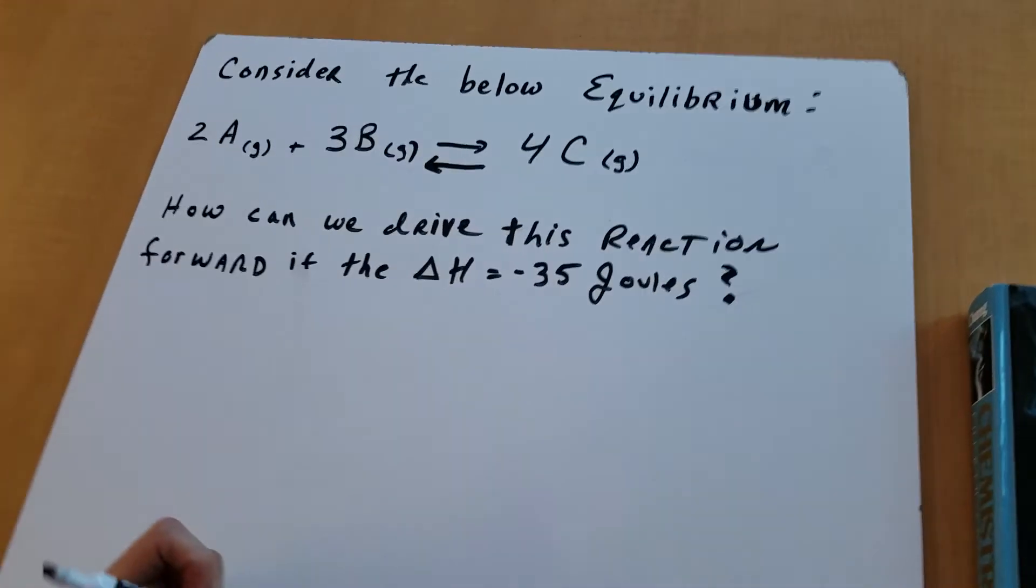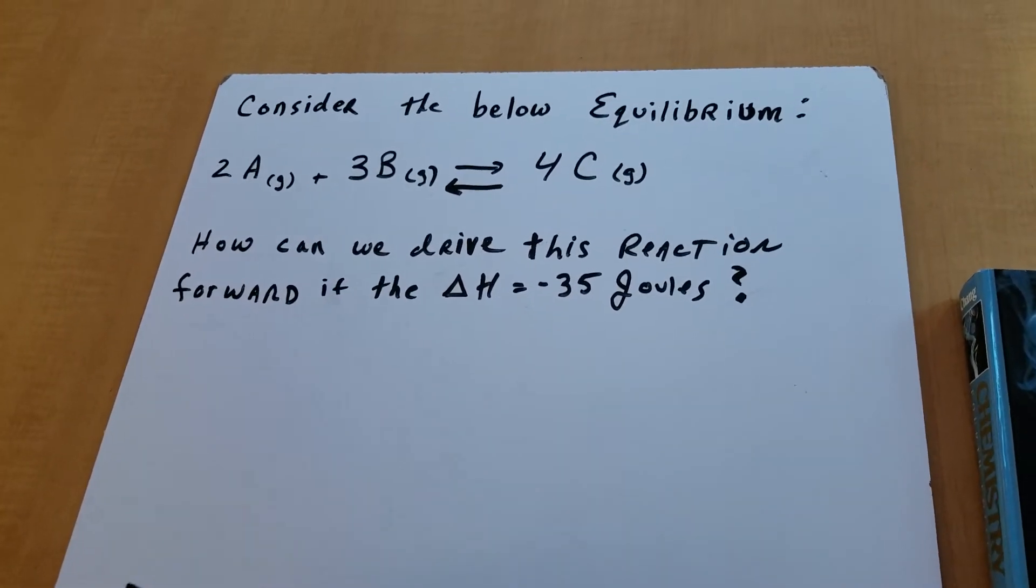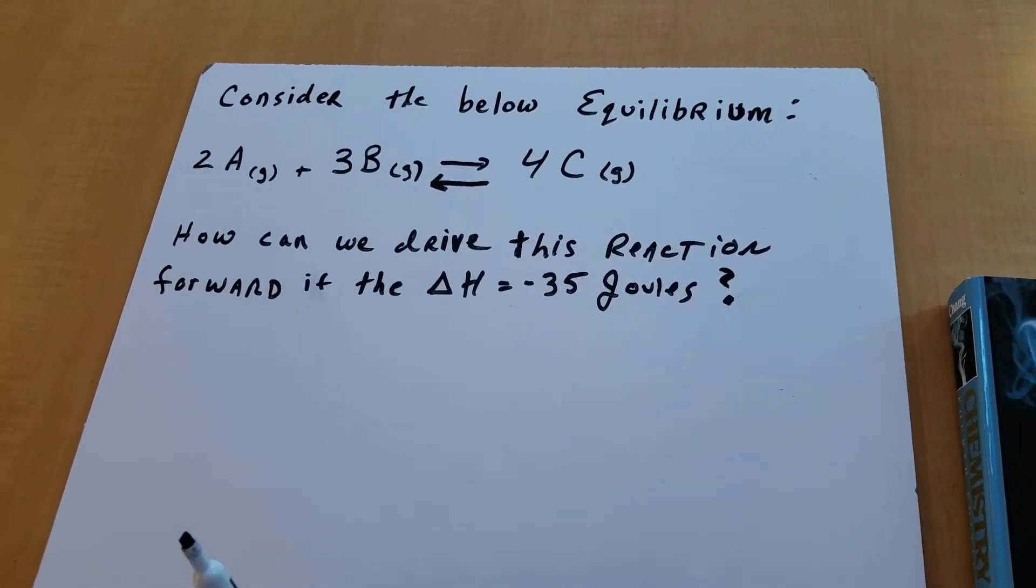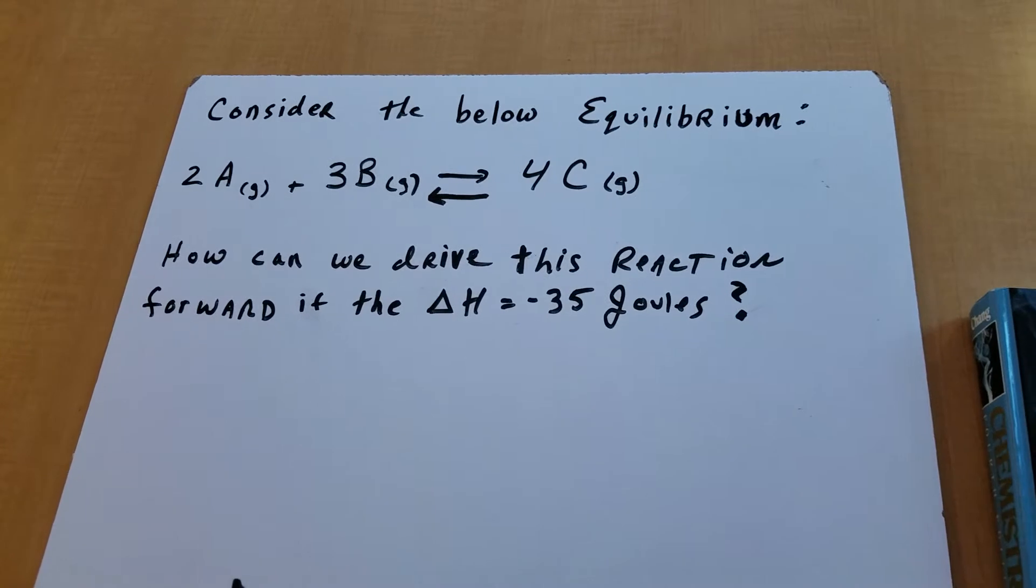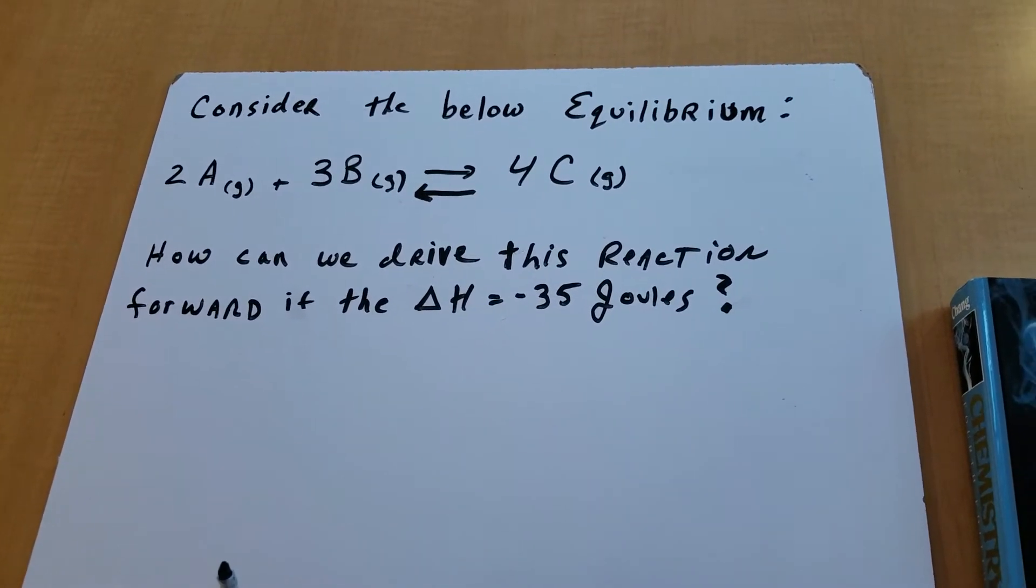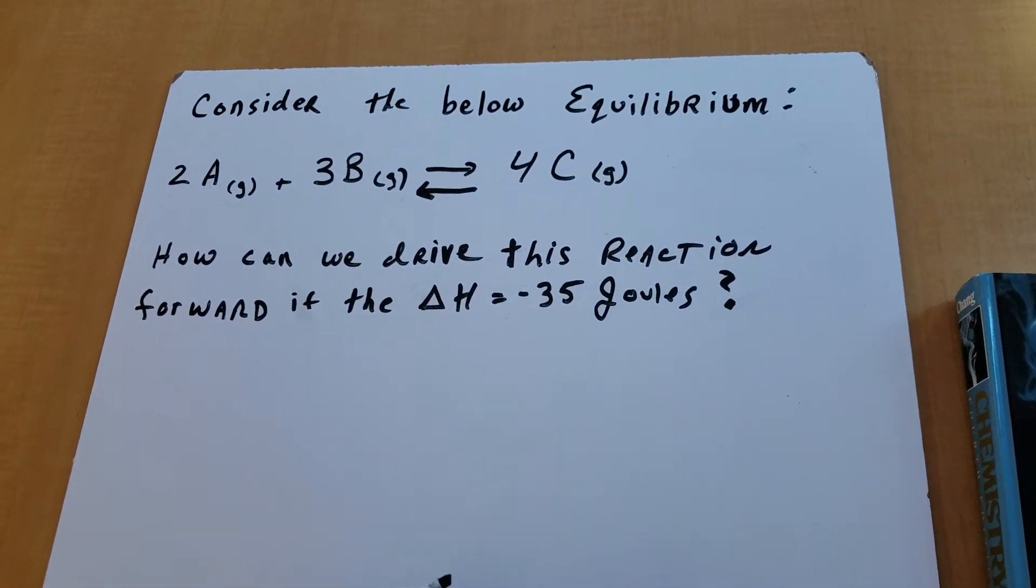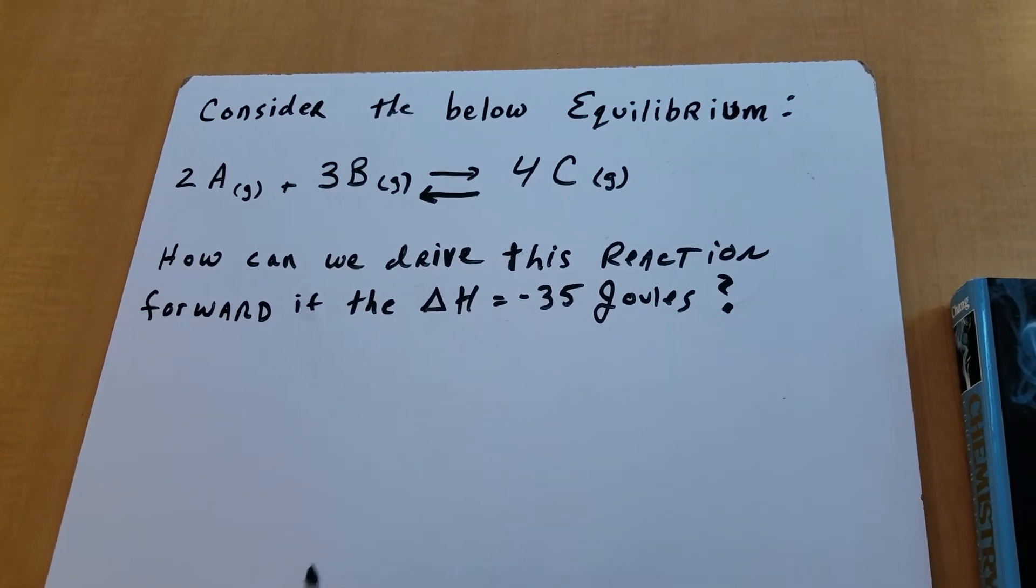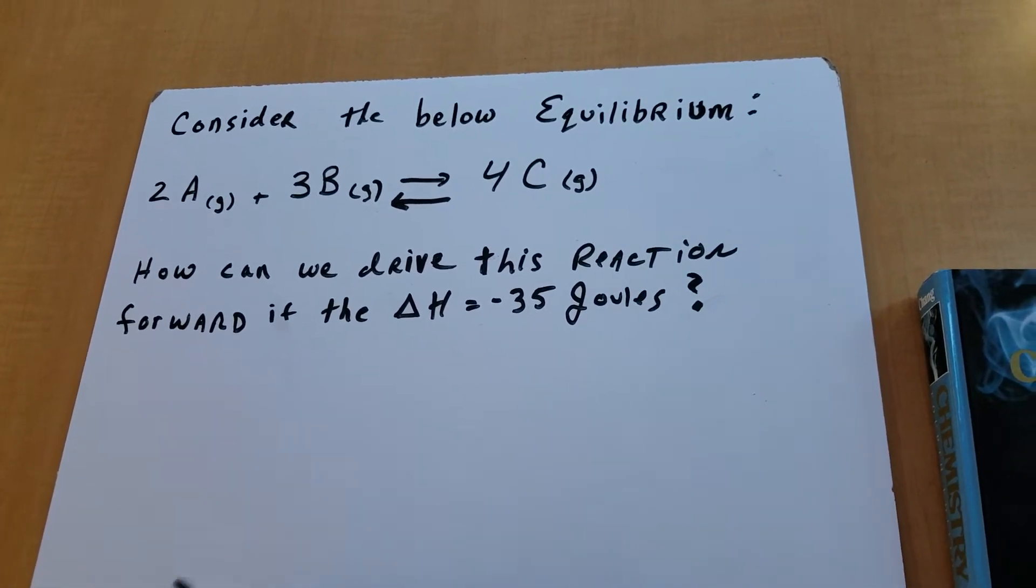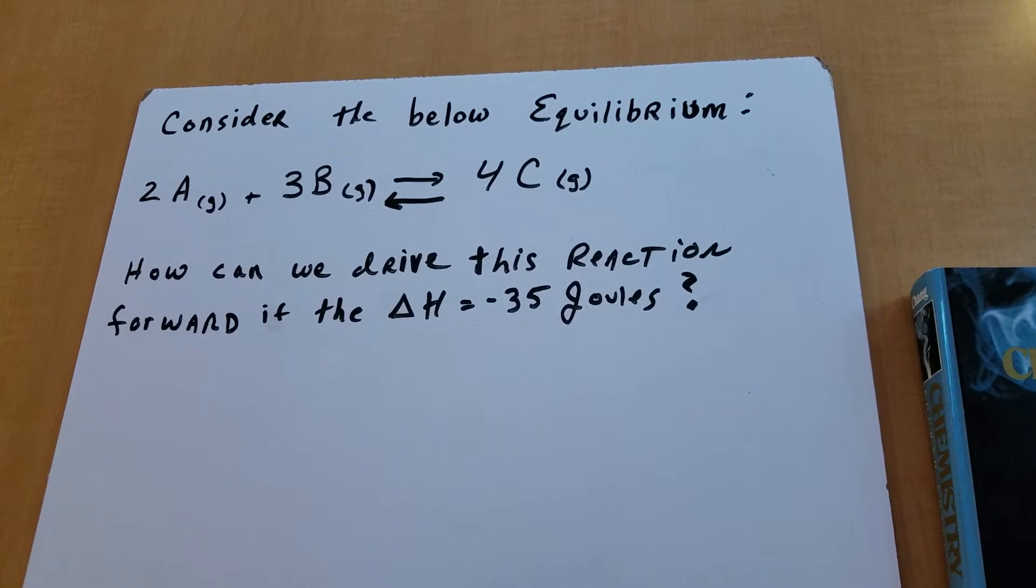What we're going to do is, it says consider the below equilibrium. And I give you a reaction and I want to know how can we drive this reaction forward, meaning towards the product. And the heat of the reaction is negative 35 joules, meaning the reaction is exothermic.